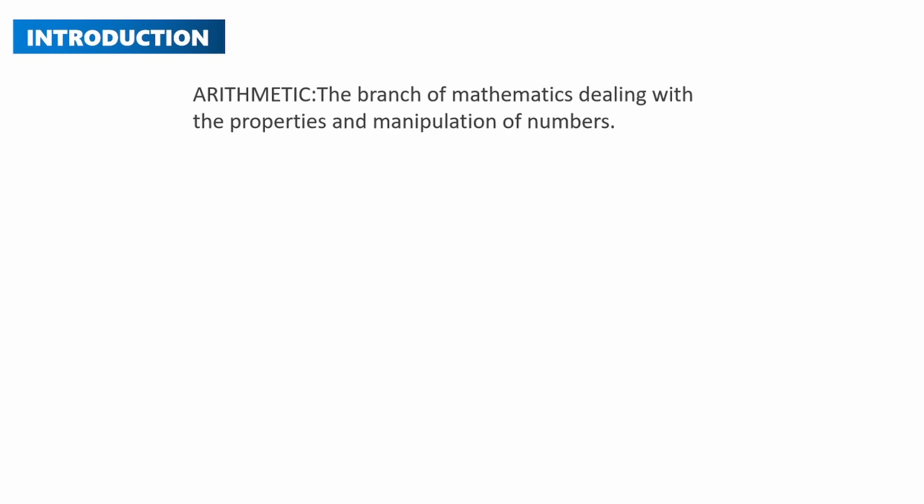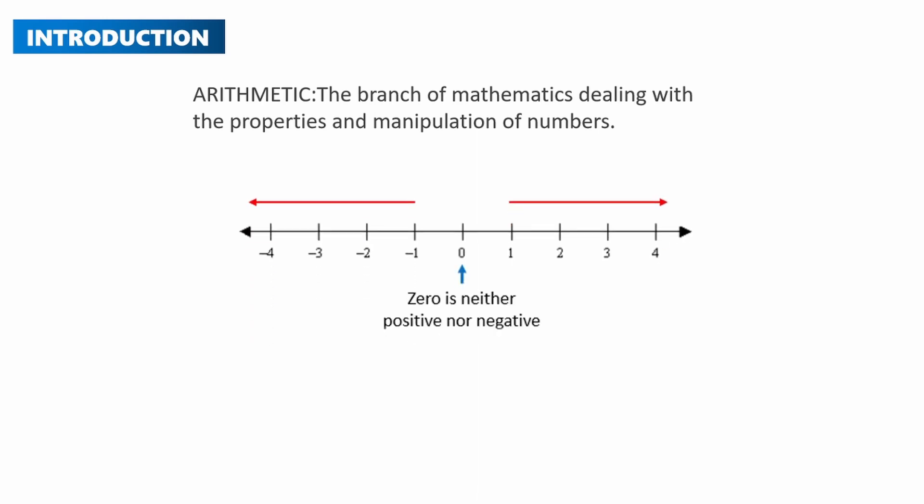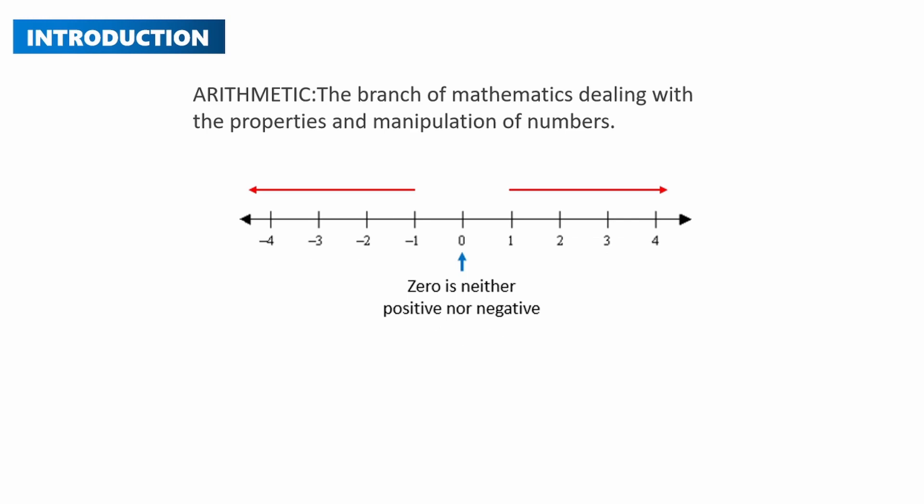Arithmetic is simply the branch of mathematics dealing with the properties and manipulation of numbers. Let's begin with the foundation, which is a number line. It's very important for you to understand the number line because it will help you with calculations in this topic and others. Zero is neither a positive nor a negative number.